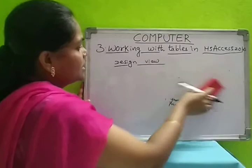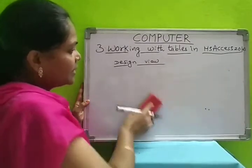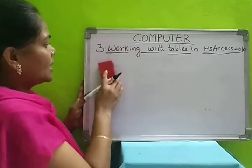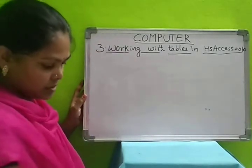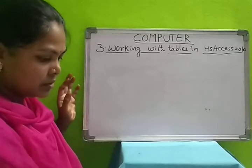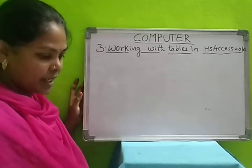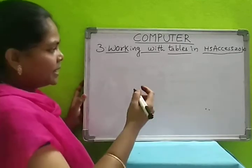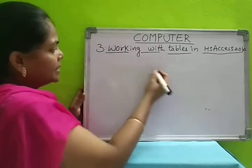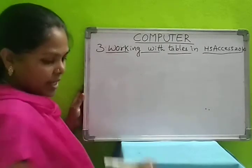That is in design view. After designing, again we have to go to the datasheet view and there we have to enter the records. Next is setting the primary key. After entering the records, select the primary key — it is in the tools bar, under the design tab.